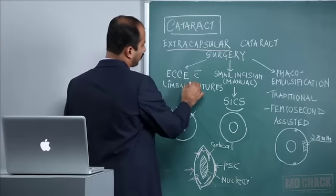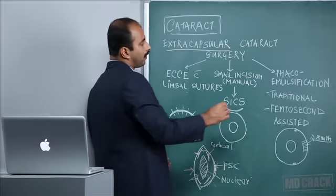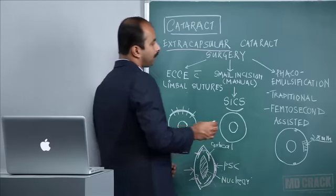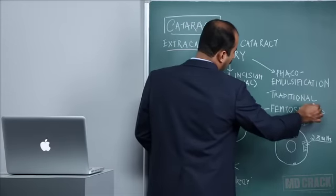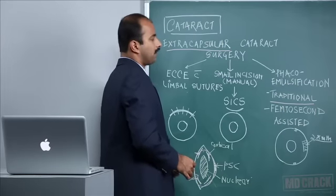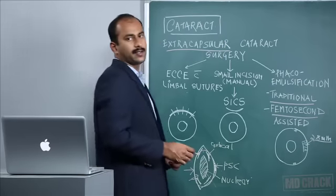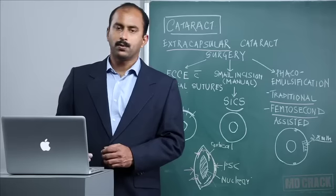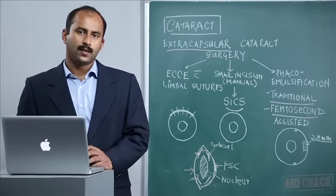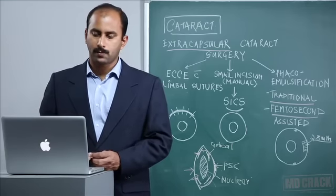The three techniques are: extracapsular extraction with limbal sutures, small incision manual cataract surgery, and phacoemulsification which uses an ultrasound machine. A new generation called femtosecond-assisted cataract surgery uses the femtosecond laser to construct incisions, make the capsulotomy opening, and debulk the nucleus — only the final lens removal is done by the conventional ultrasonic phacoemulsifier.